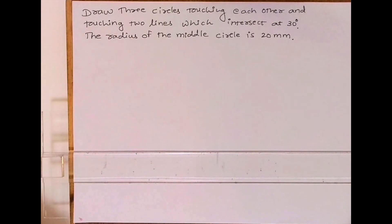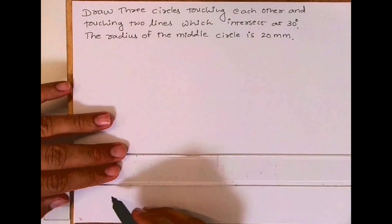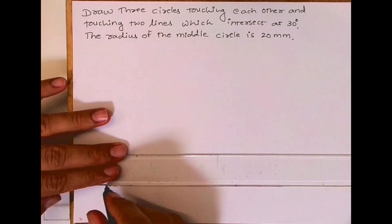Welcome to technical drawing. Today we'll see how to draw three circles touching each other and touching two lines which intersect at 30 degrees. The radius of the middle circle is 20mm. First, I will draw...